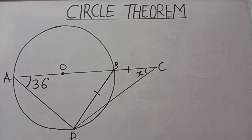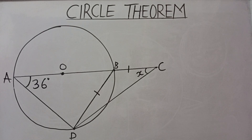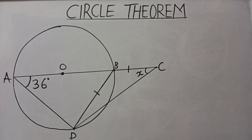Hello viewers, welcome to my channel. Let's take a look at this particular question — it's a very interesting question on circle theorems. To solve this question we have to follow certain approaches. We are given in the diagram angle BAD as 36 degrees, the circle has a center O, and we are required to find the value of angle BCD, labeled as x.